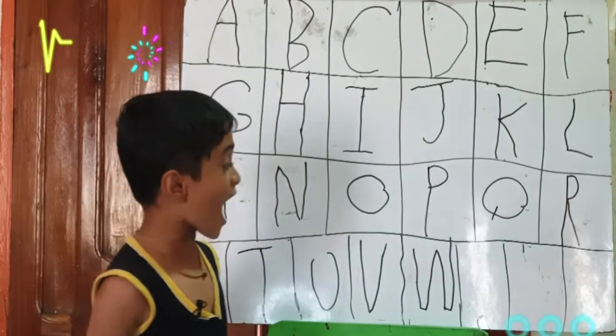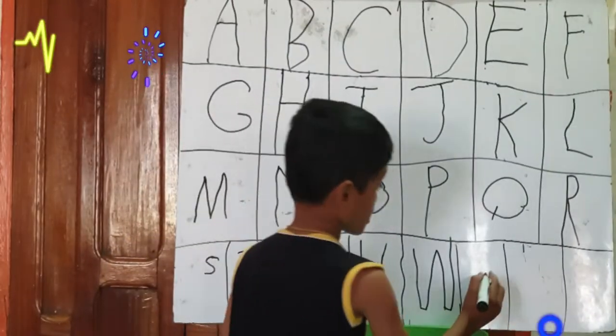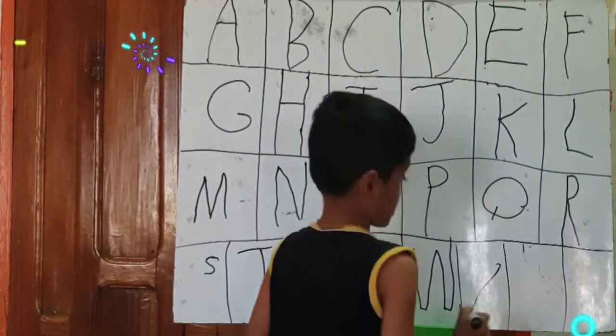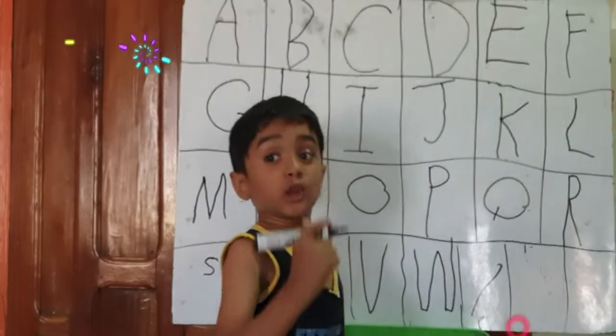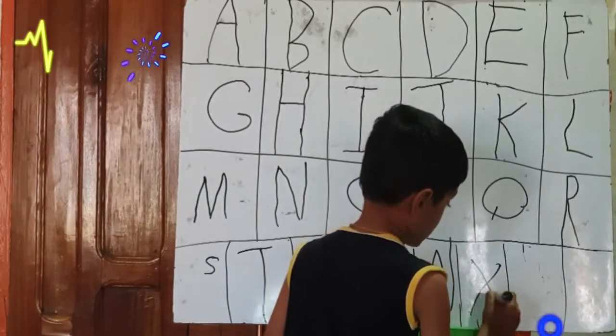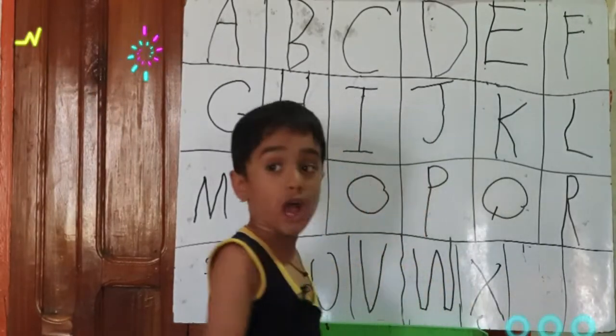Now we're learning X. One cross down, one cross down. That makes X.